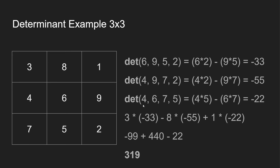To see this in action: first, find the determinant of the submatrix [6,9;5,2], which gives negative 33. Next, find the determinant of [4,9;7,2], which gives negative 55. Then find the determinant of [4,6;7,5], which gives negative 22 — four times five minus six times seven. Now multiply: three times negative 33 gives negative 90. Then subtract eight times the second determinant, and add one times the third. Summing all of this gives a final solution of 319.